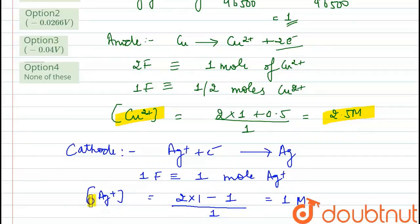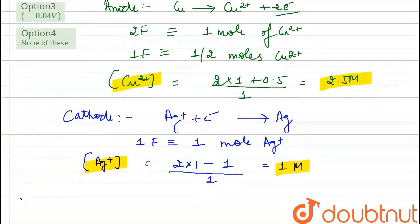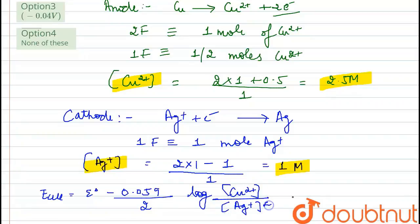From this, we need to find E_cell. The E_cell value is given by the Nernst equation: E_cell = E° − (0.059/2) × log([Cu²⁺] / [Ag⁺]²), where 2 is the number of electrons involved and 2 is the stoichiometry of Ag⁺.